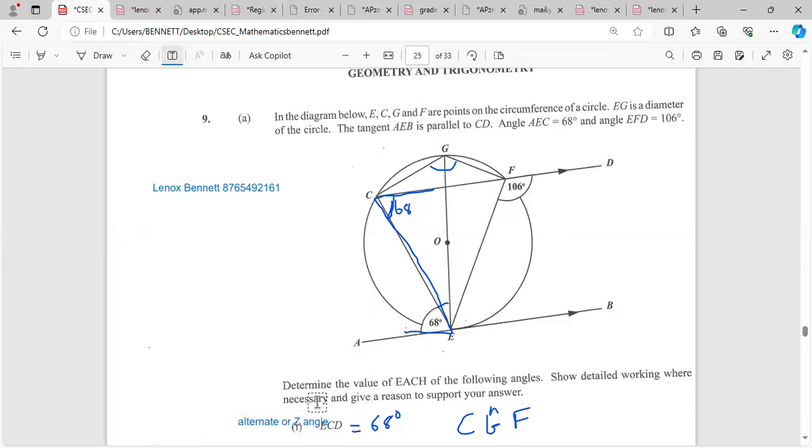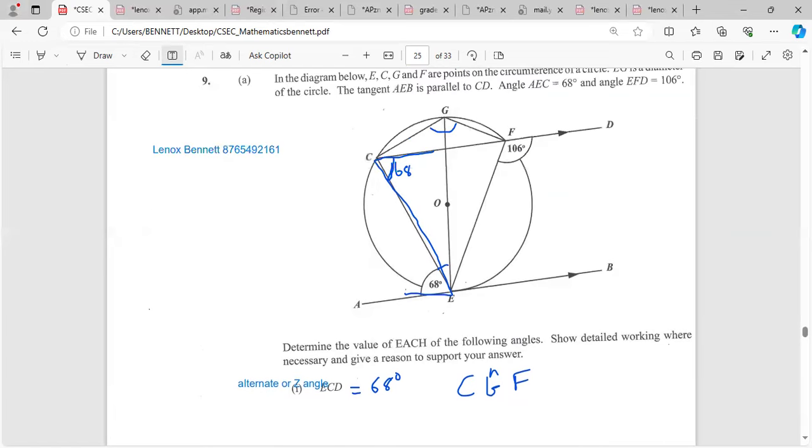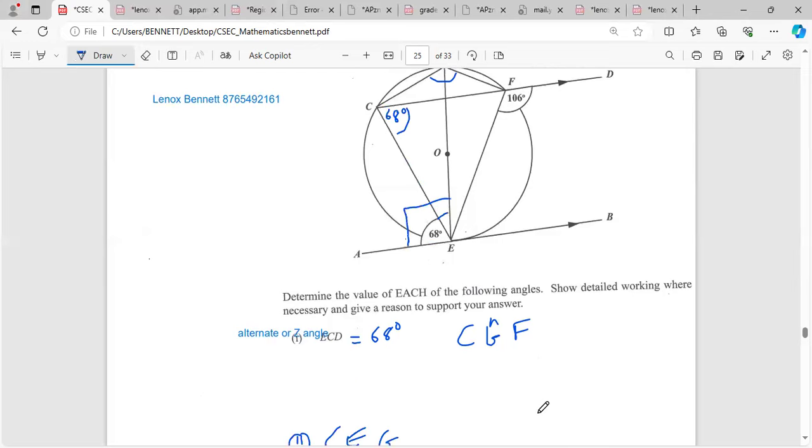Let's move on to CEG. They want us to find CEG, which is this angle that I actually marked. That should not be hard. Now this angle is between the radius and the tangent, so this should give us 90 degrees. If we already got 68, then all we have to do is subtract 68 from 90.